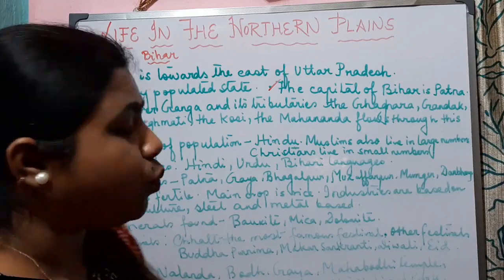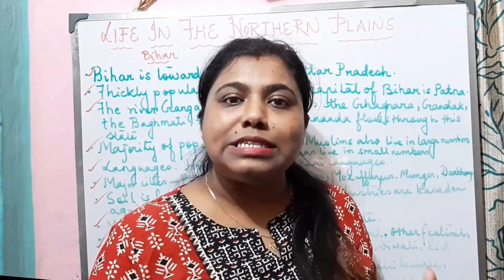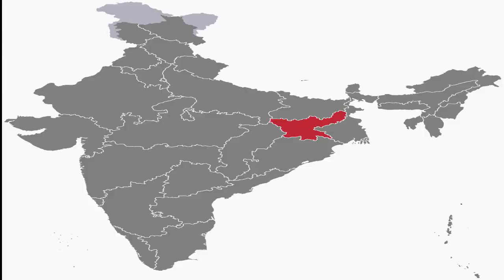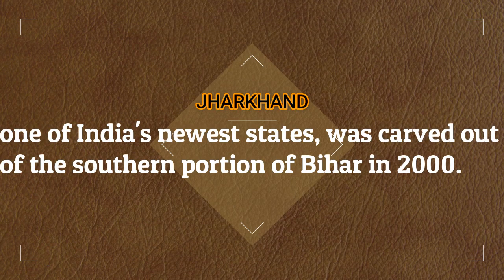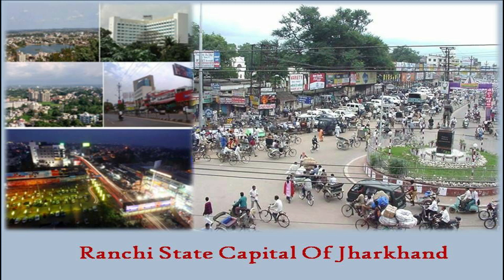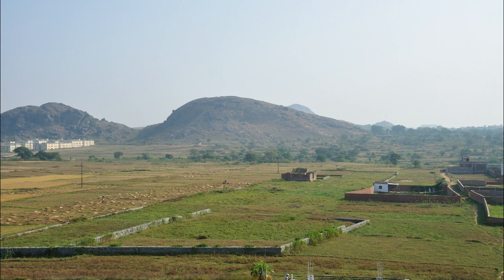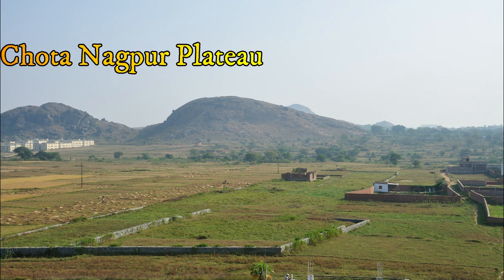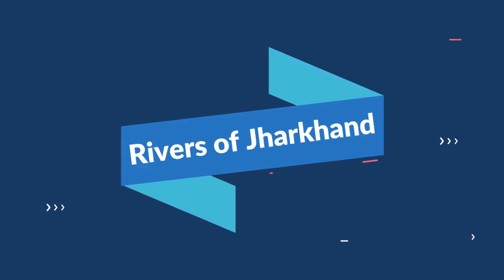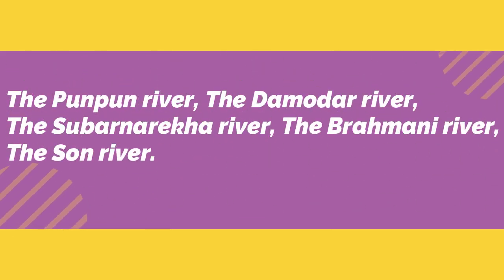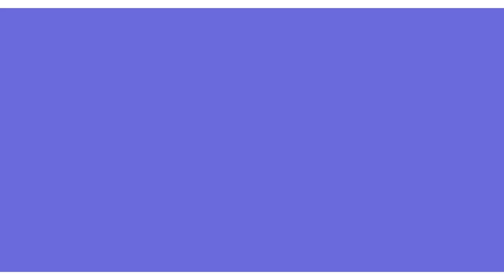Now let us know about the state of Jharkhand. Jharkhand is a state in eastern India and one of India's newest states, carved out of the southern portion of Bihar in the year 2000. The capital of Jharkhand is Ranchi. The most prominent physical feature is the Chhota Nagpur Plateau, a part of the vast Deccan Plateau. Rivers flowing through Jharkhand include the Punpun, Damodar, Suvarnarekha, Brahmani, and Son rivers.